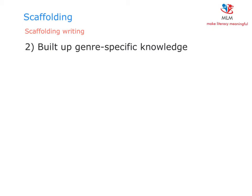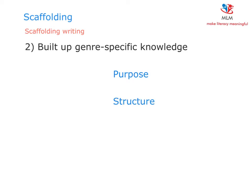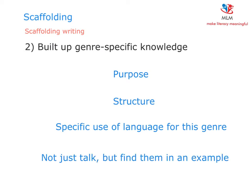If you write a text, you do not only need content-related knowledge but also genre-specific knowledge. Therefore, at this stage, children are made aware of the purpose of the text and the structure of the text. The specific use of language for the genre should also be discussed. It is always helpful for students not just to talk about those elements but to find them in an example of that genre — for example, reading a text about a certain dog and pointing out the aspects mentioned.